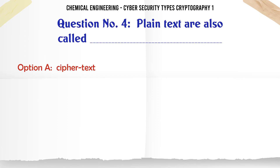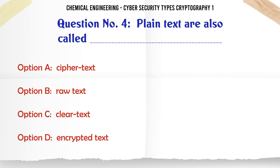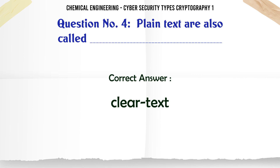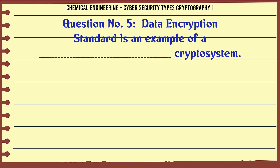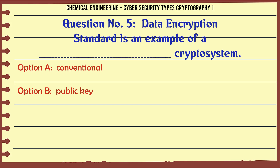Plain text is also called: A) Cipher text, B) Raw text, C) Clear text, D) Encrypted text.